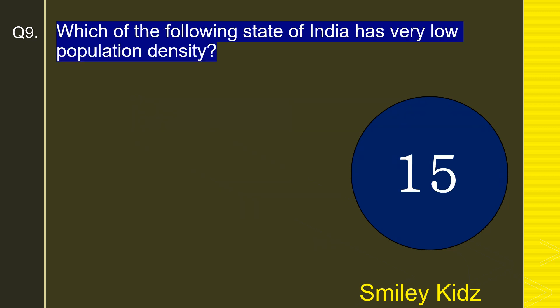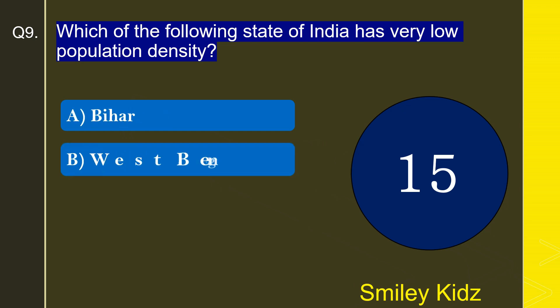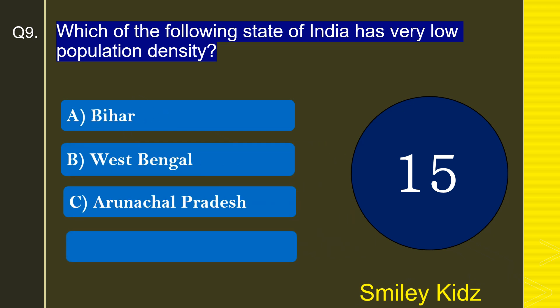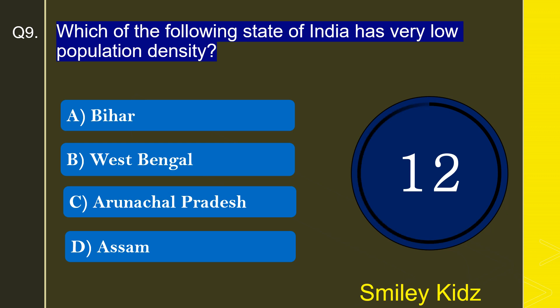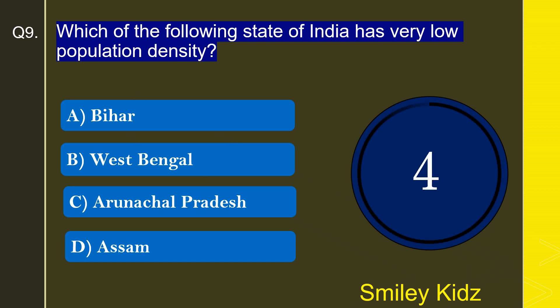Question number 9: Which of the following states of India has very low population density? Options are Bihar, West Bengal, Arunachal Pradesh, or Assam. The correct answer is Arunachal Pradesh. Arunachal Pradesh is the state of India which has very low population density.